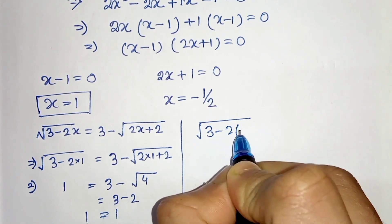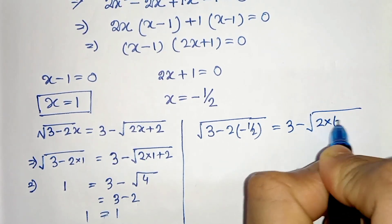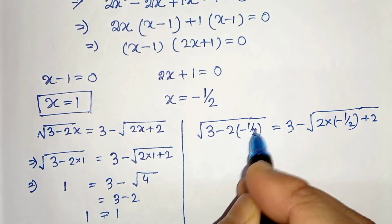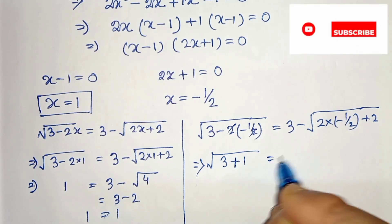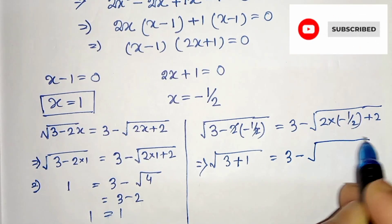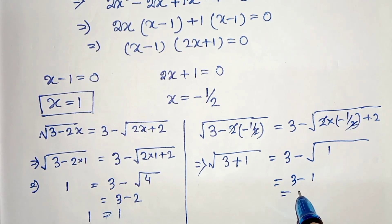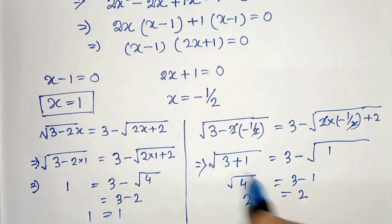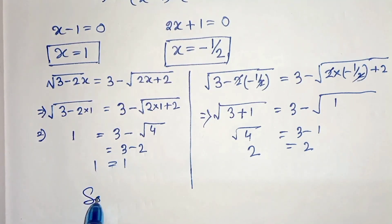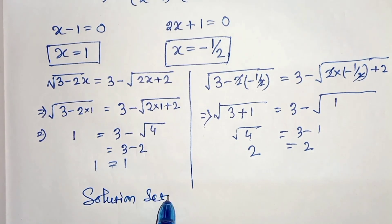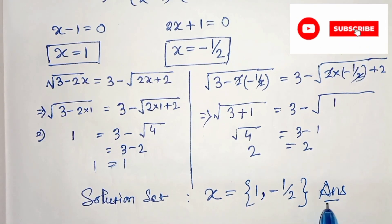Now let's put x = -1/2: LHS = √(3 - 2×(-1/2)) = √(3 + 1) = √4 = 2. RHS = 3 - √(2×(-1/2) + 2) = 3 - √(-1 + 2) = 3 - √1 = 3 - 1 = 2. Both sides equal 2, so x = -1/2 also satisfies the equation. Our solution set is x = 1 and x = -1/2. Thanks for watching.